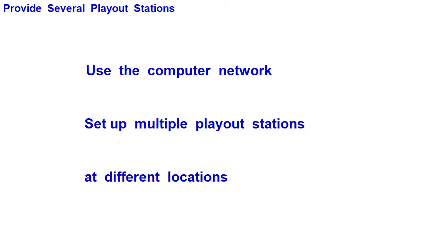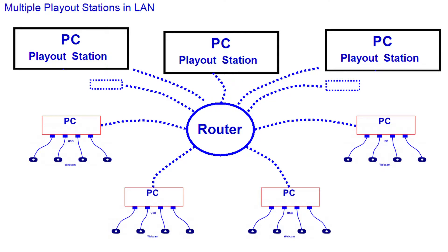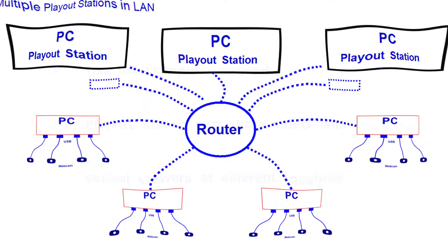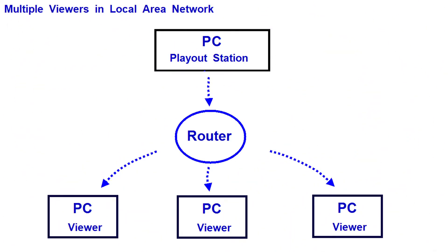The video network system is like a closed-circuit TV system, but it is simpler to set up and costs less. Furthermore, unlike a closed-circuit TV, it can provide multiple play out stations located anywhere within the local area network. It is also important to know that the play out station can play out both recorded videos and live videos. With special software, the play out station can share its video with several viewers in the local area network and even on the internet, allowing several people to watch live or recorded video at the same time from different locations.